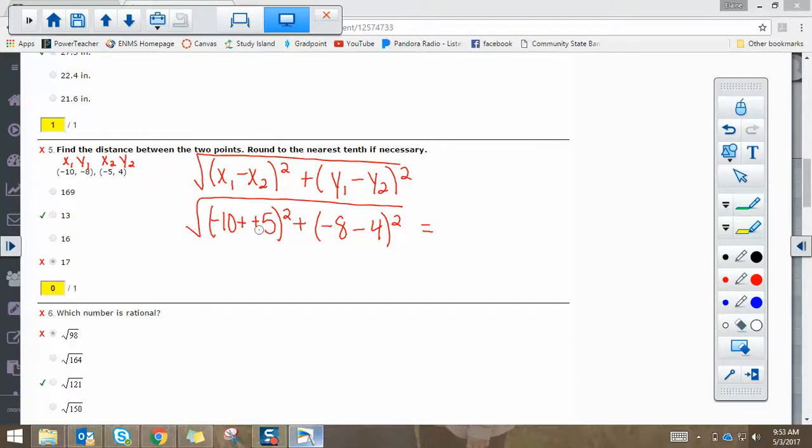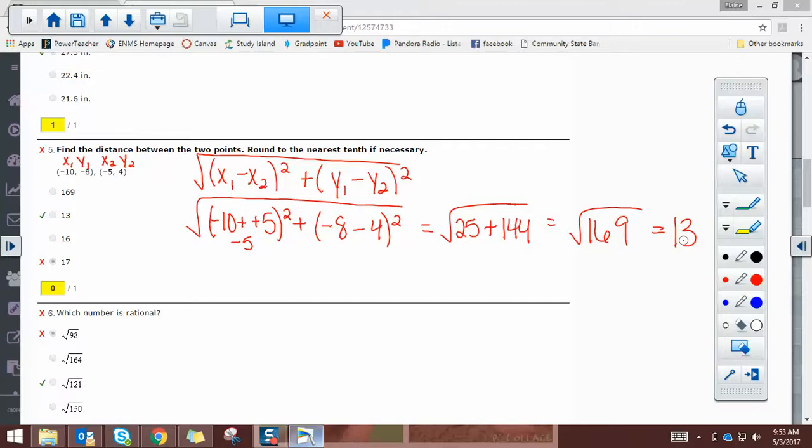Negative 10 plus 5 is negative 5. And you're going to square negative 5, you're going to get 25. We're going to add to that. Negative 8 minus 4, that's negative 12. Negative 12 squared is 144. Now when you add 25 plus 144, you get 169. And when you square root 169, you get 13.